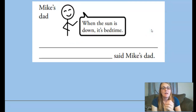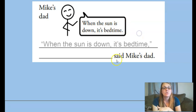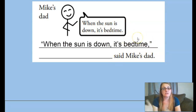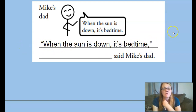Mike's dad is saying 'when the sun is down, it's bedtime.' There's a comma in the phrase he is saying, but don't let that confuse you — there still needs to be a comma before the end of the quotation marks to separate what is being said from the rest. So: 'When the sun is down, it's bedtime,' said Mike's dad.